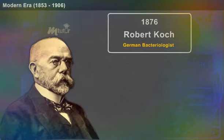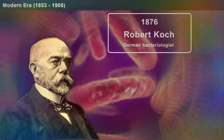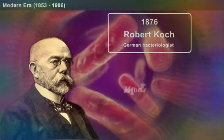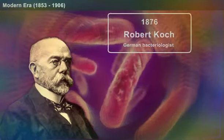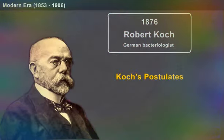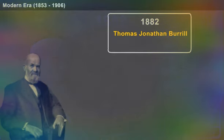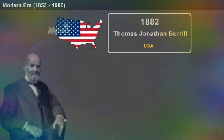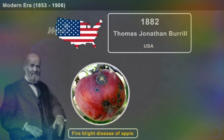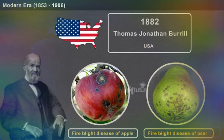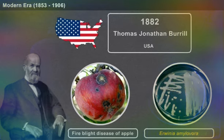In 1876, Robert Koch, a German bacteriologist, explained the necessary steps required for an organism to cause an infectious disease, known as Koch's postulates. In 1882, Thomas Jonathan Burrill of the USA first reported the fire blight disease of apple and pear, caused by a bacterium currently known as Erwinia amylovora.